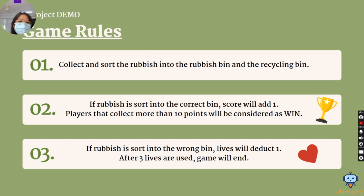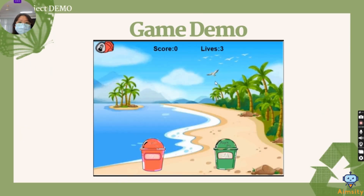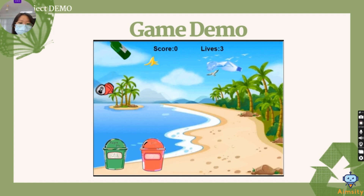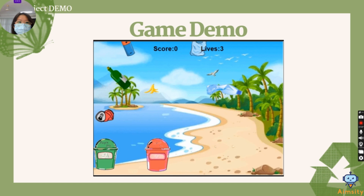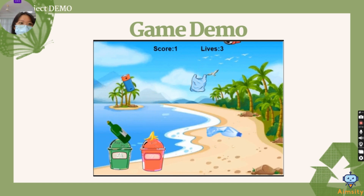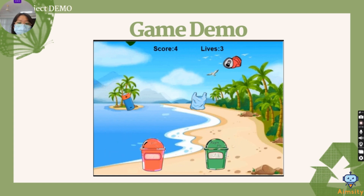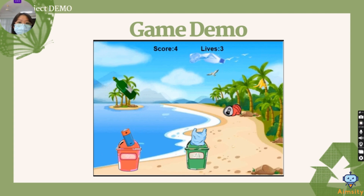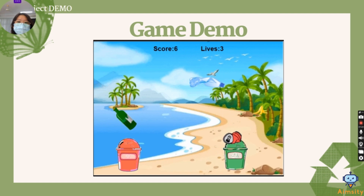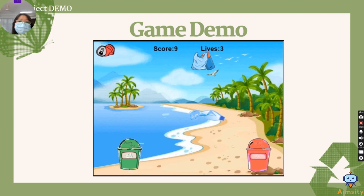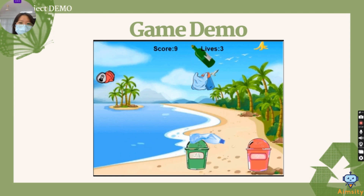My game is to collect and sort the rubbish into the rubbish bins and the recycling bins. This is my game demo. There are 2 bins: one is the recycling bin and one is the rubbish bin. The rubbish bin is red and it only collects banana skins and batteries. The other items are collected into the recycling bin, which is green. The score increases by 1 every time a piece of rubbish is sorted into the correct bin.